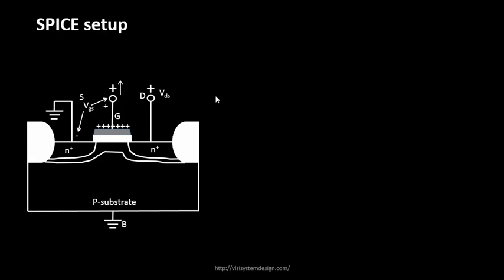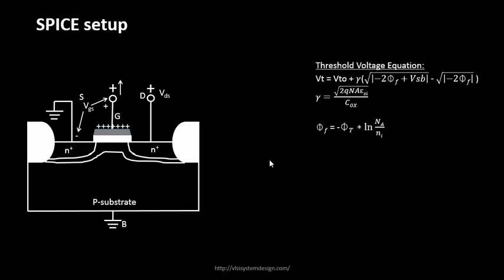This is the MOSFET we have been using. We applied the VDS voltage, applied the gate-to-source voltage, and grounded the source and substrate. There were some model parameters we derived — for example, the threshold voltage equation, where VT is the threshold voltage and VTO is the threshold voltage in the absence of VBS. Gamma is the body effect coefficient and phi is the Fermi potential.